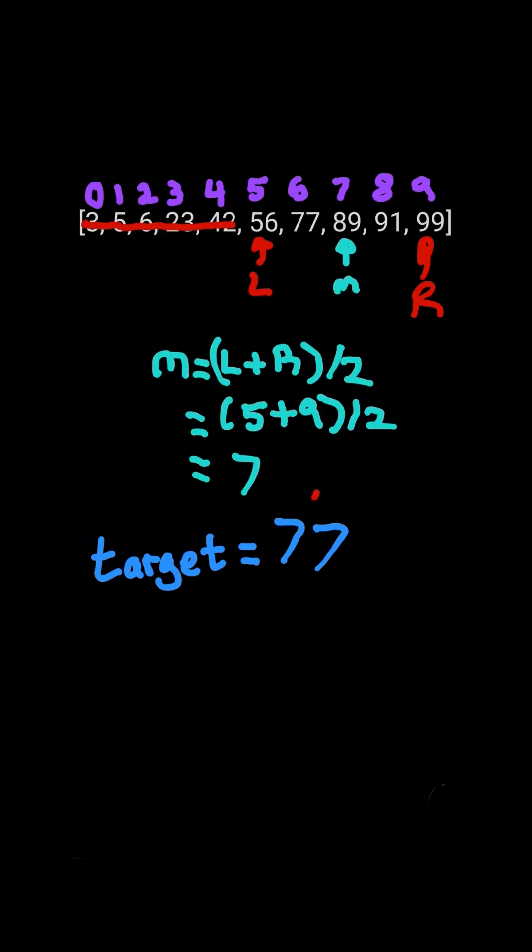We calculate the midpoint. Since 77 is less than our midpoint, and so we will move our R pointer down to mid minus 1.